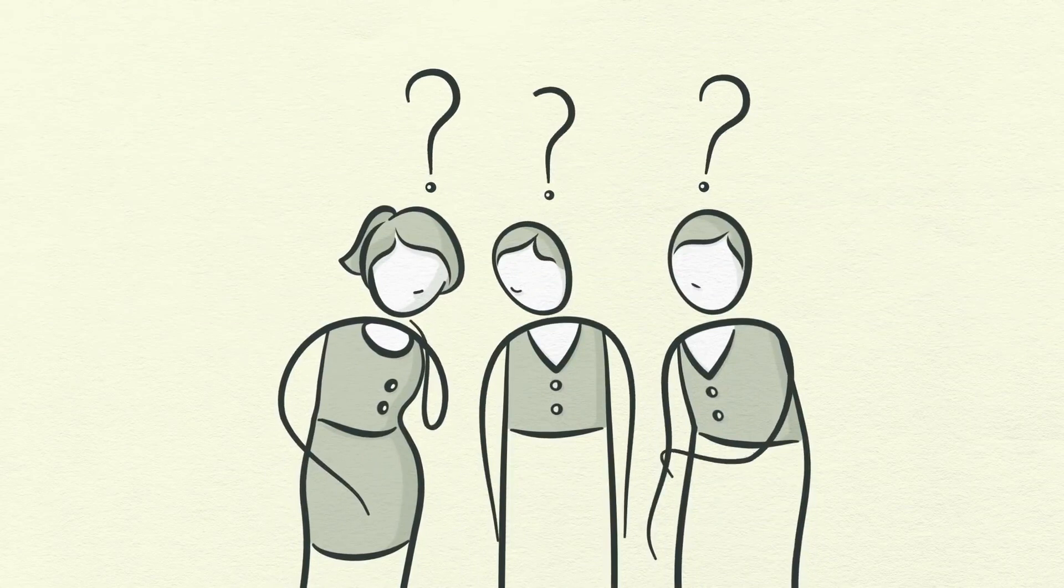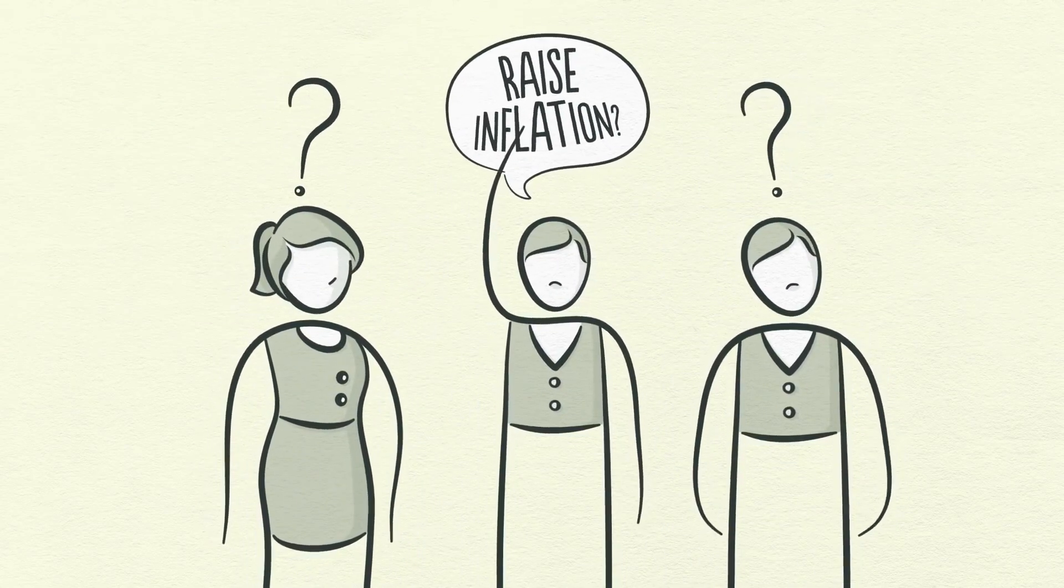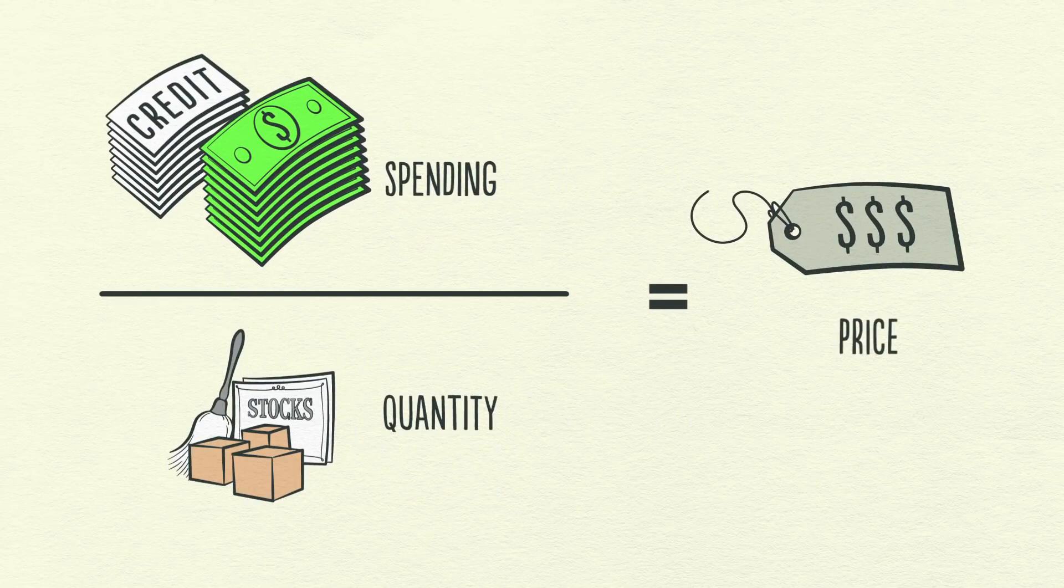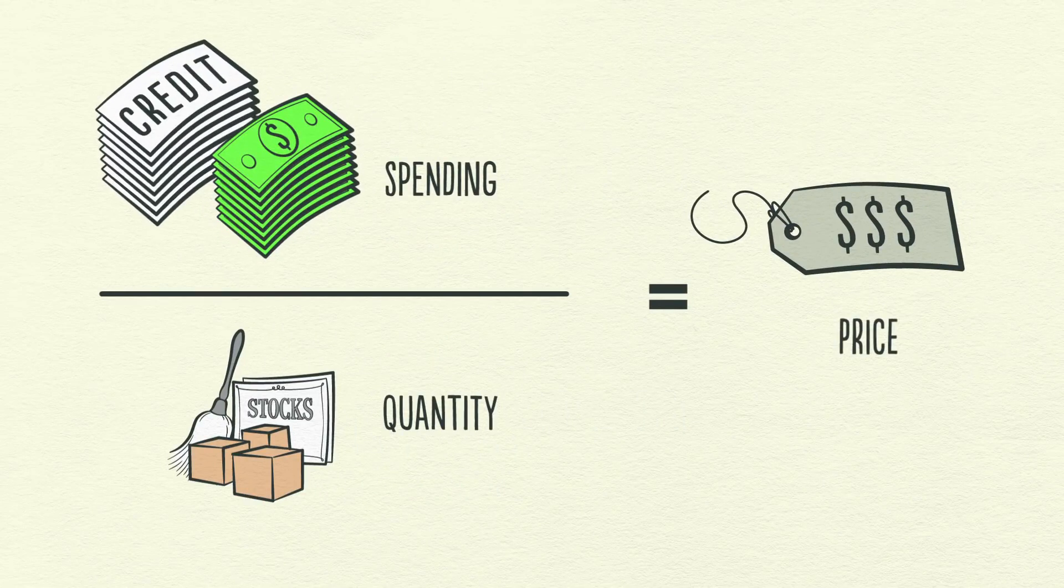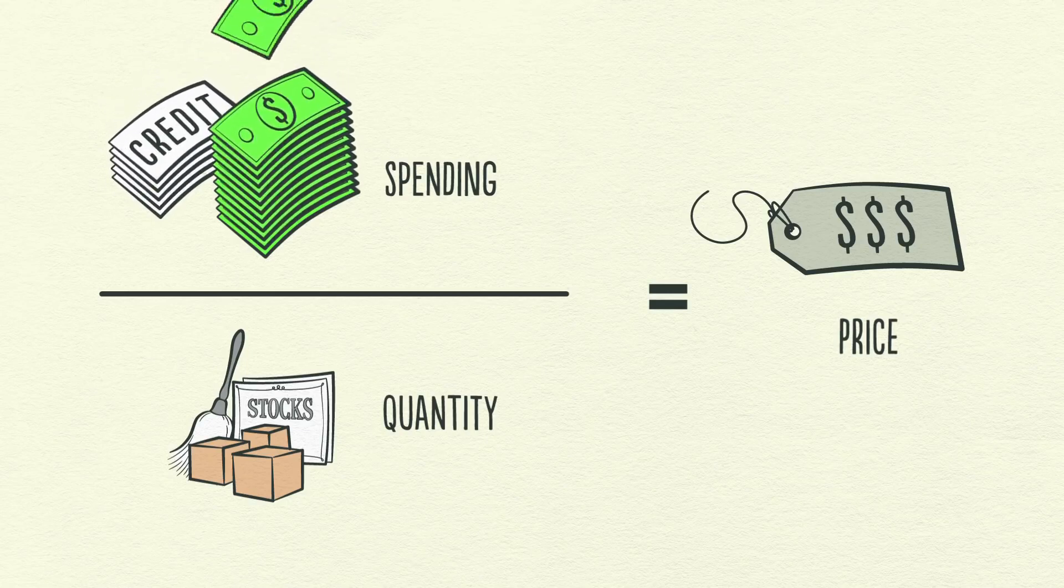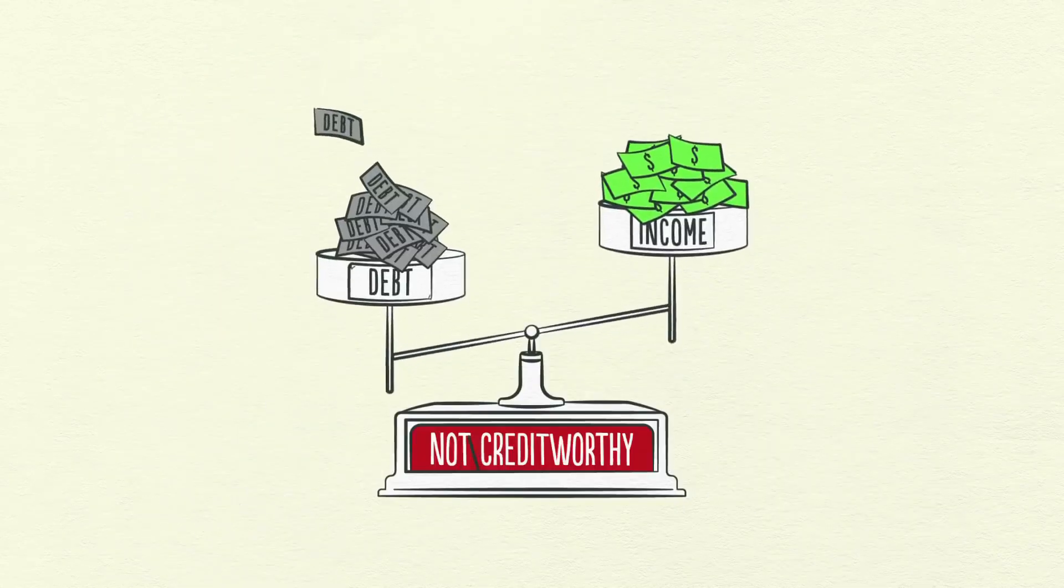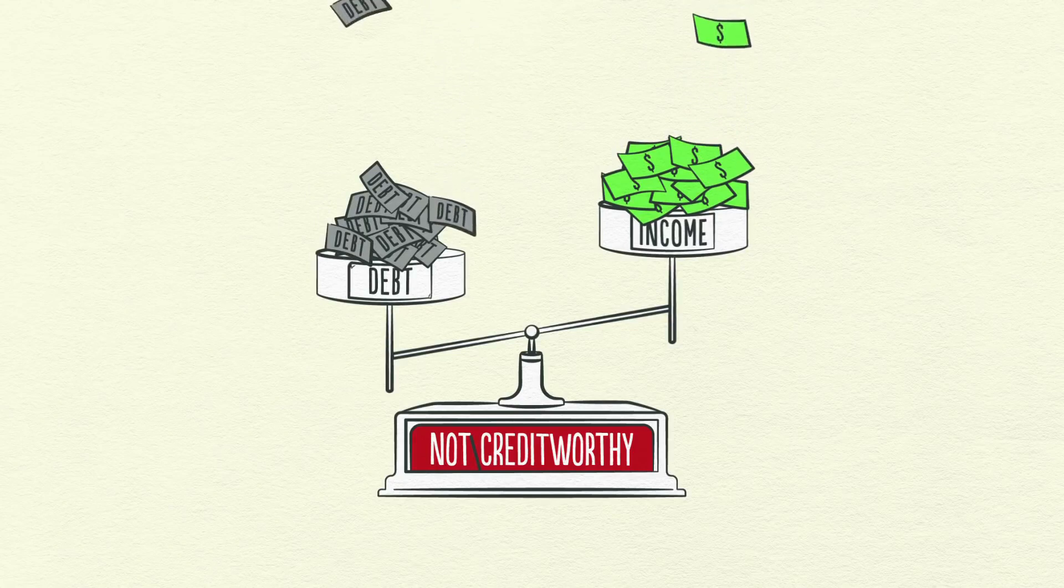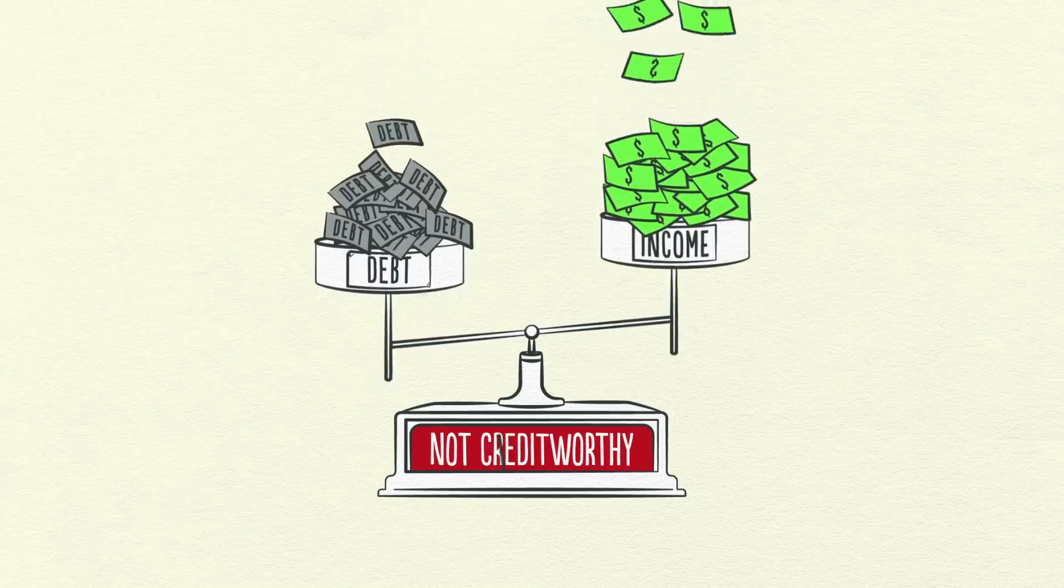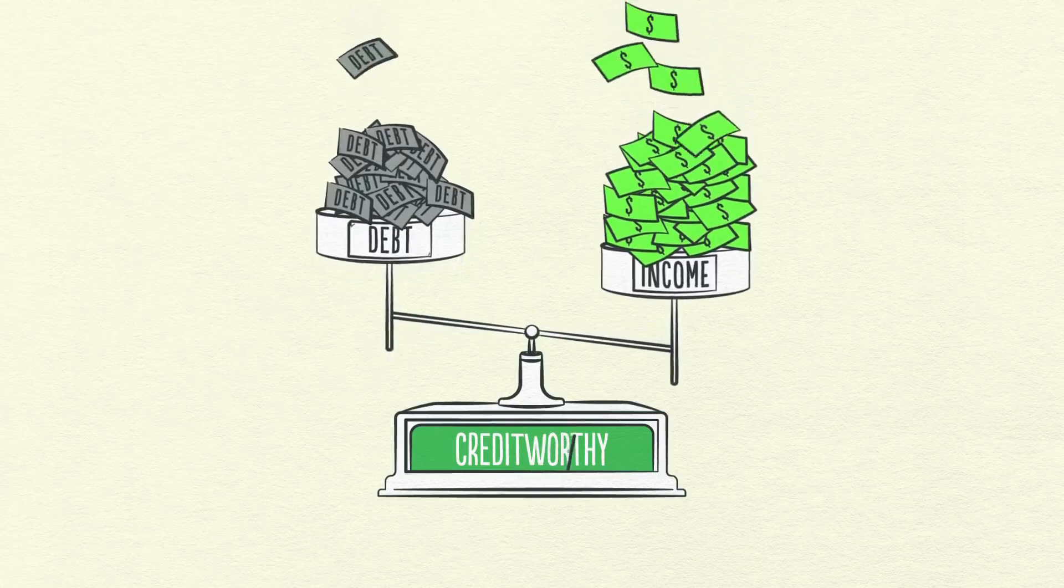People ask if printing money will raise inflation. It won't if it offsets falling credit. Remember, spending is what matters. A dollar of spending paid for with money has the same effect on price as a dollar of spending paid for with credit. By printing money, the central bank can make up for the disappearance of credit with an increase in the amount of money. In order to turn things around, the central bank needs to not only pump up income growth, but get the rate of income growth higher than the rate of interest on the accumulated debt. So what do I mean by that? Basically, income needs to grow faster than debt grows.